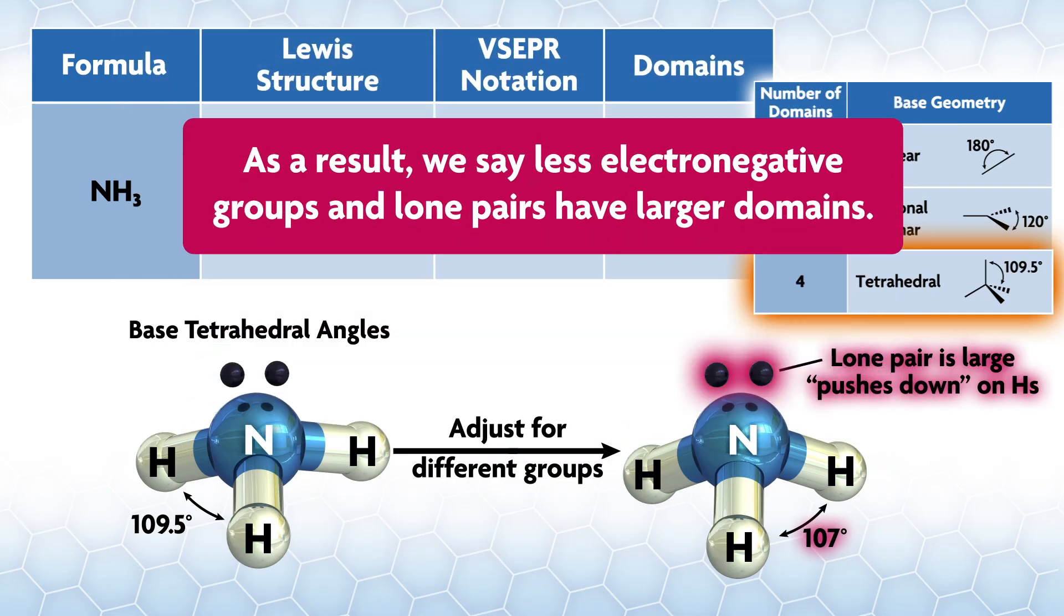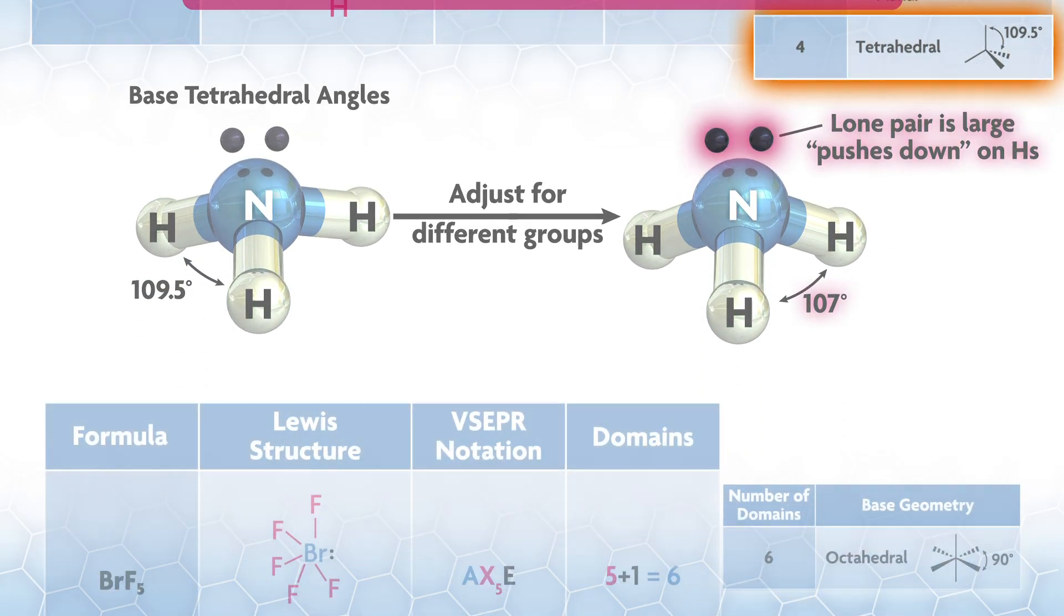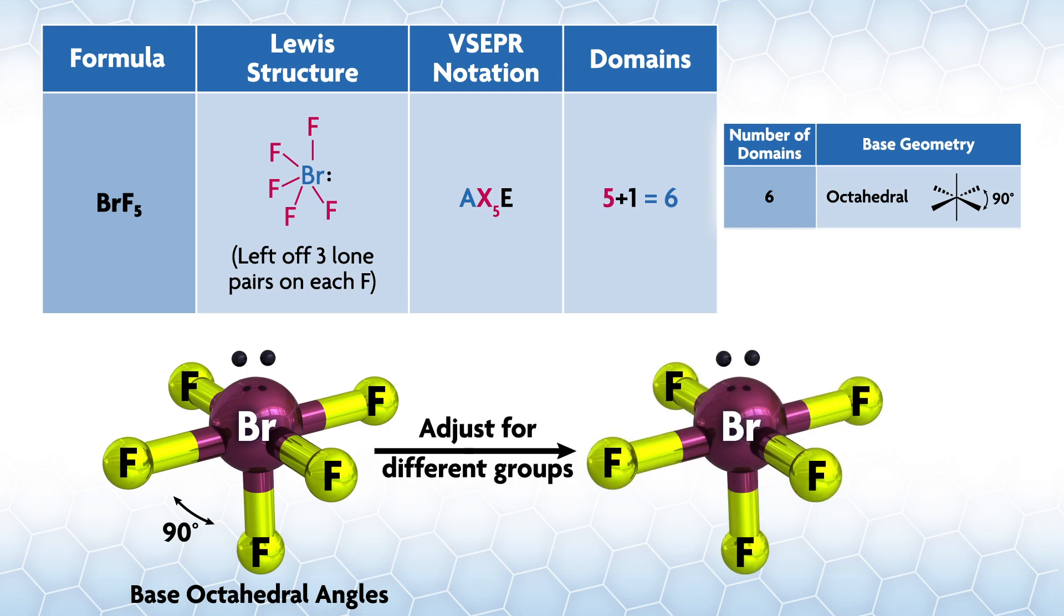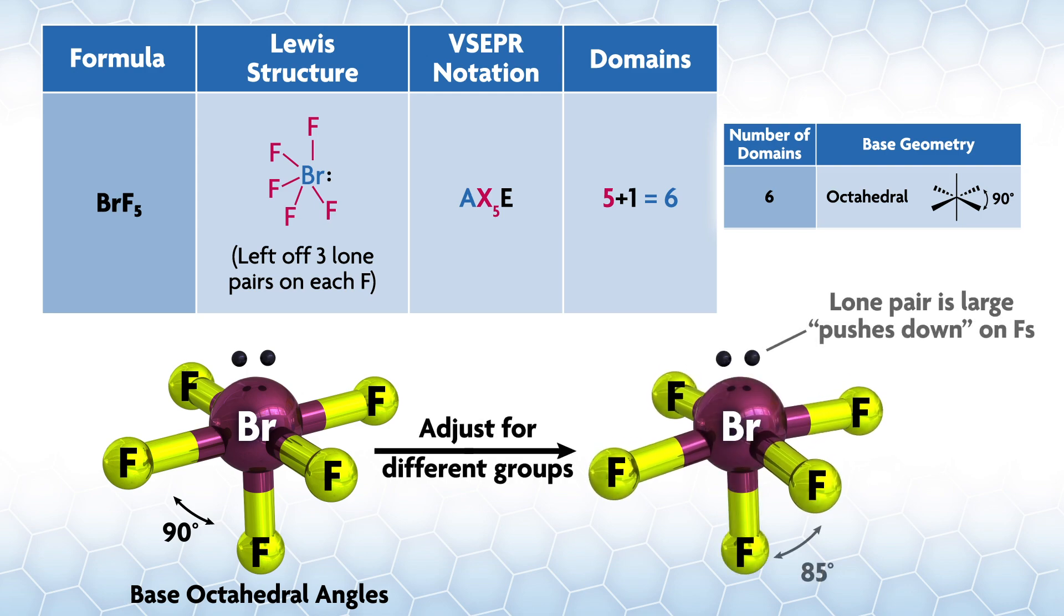In contrast, the electron domain moves towards the more electronegative fluorine and is smaller near the central atom, so it takes up a smaller angle near A. As a result, we say less electronegative groups and lone pairs have larger domains. The angles to them will be slightly larger. For ammonia, this means the lone pair A-H angles are larger, which shrinks the H-N-H angles.